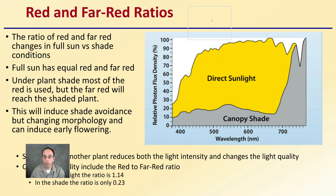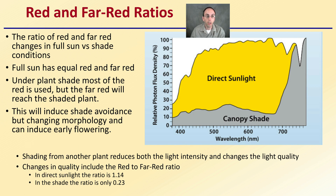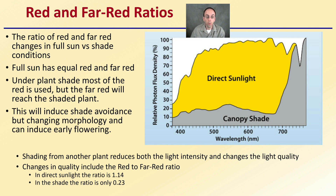The ratio of red and Far Red changes in full sun versus shade conditions. Full sun has equal red and Far Red. Under plant shade, most of the red is used, but Far Red will reach the shaded plant. When we get to the Far Red spectrum, the relative photon flux density percentage increases dramatically. This will induce shade avoidance by changing morphology and can induce early flowering in some plants. In direct sunlight, the ratio is about 1.4; in the shade, the ratio is only 0.23 — a massive shift.